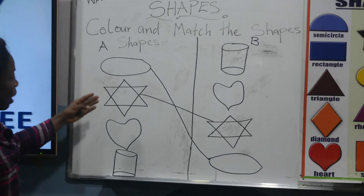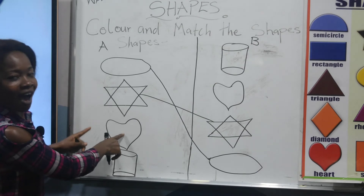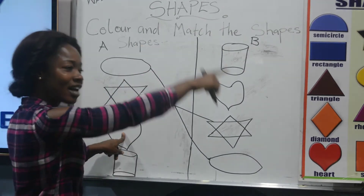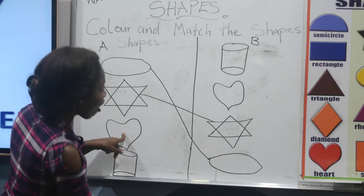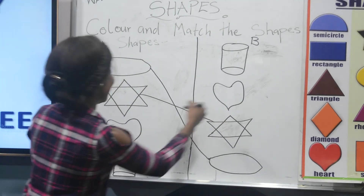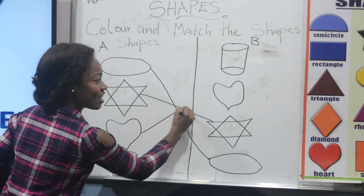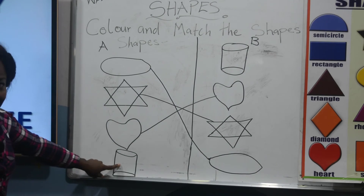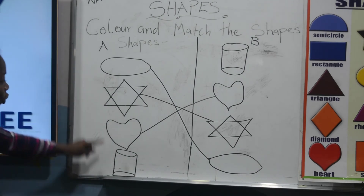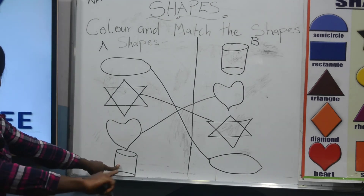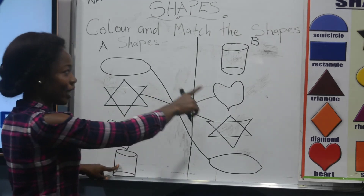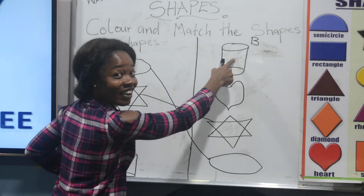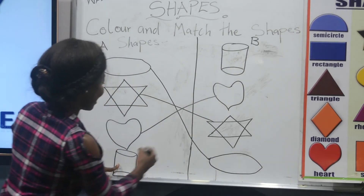Now we are moving on to heart. Heart in Group A — we are going to look for another heart in Group B. Where is it? Here! Good, then we match it. Last one: we have cylinder in Group A, so we are going to look for another cylinder in Group B. Where is it? This one — cylinder! Yes, let's match it.